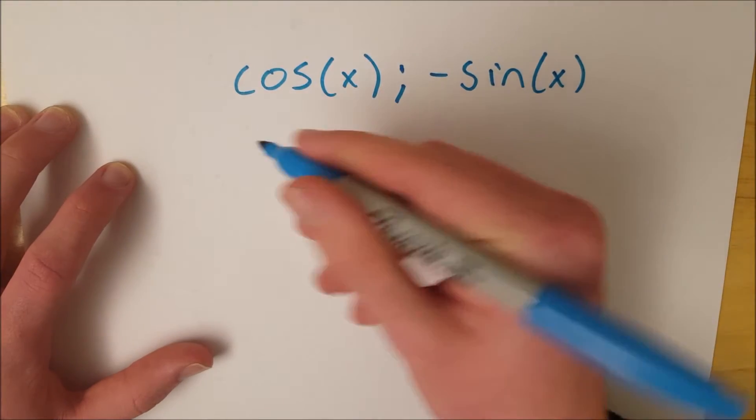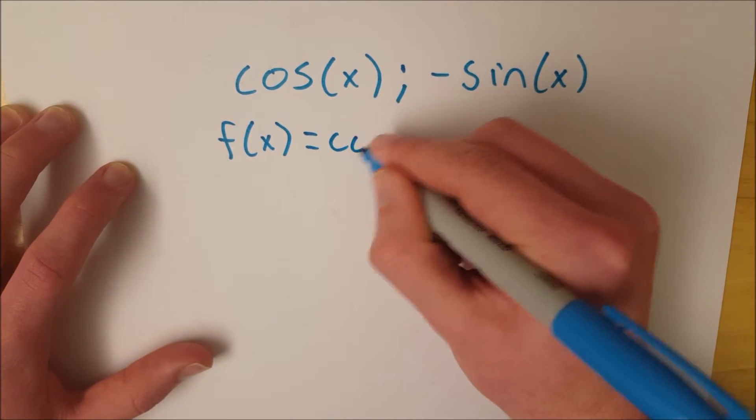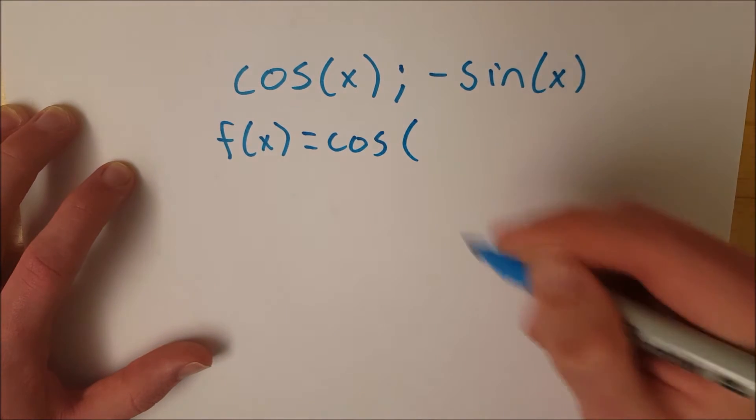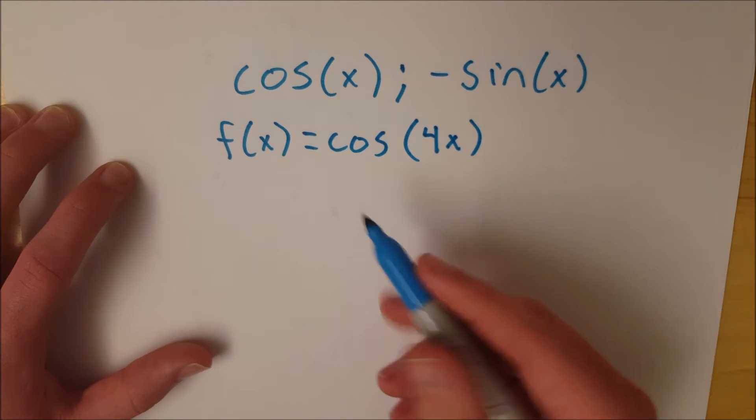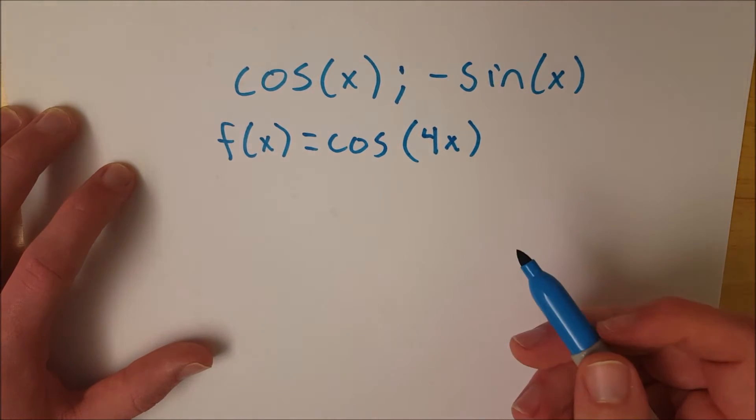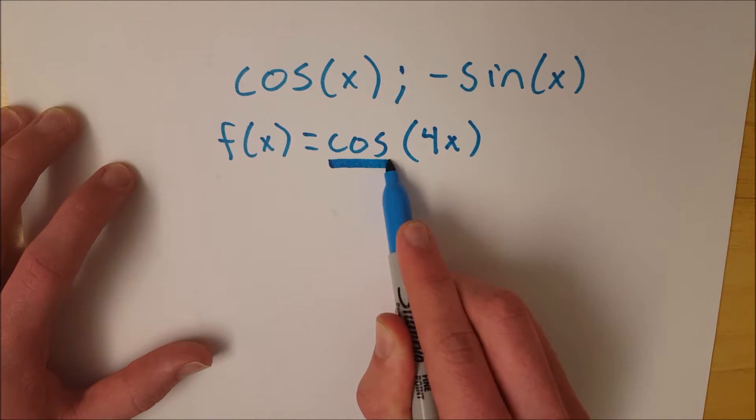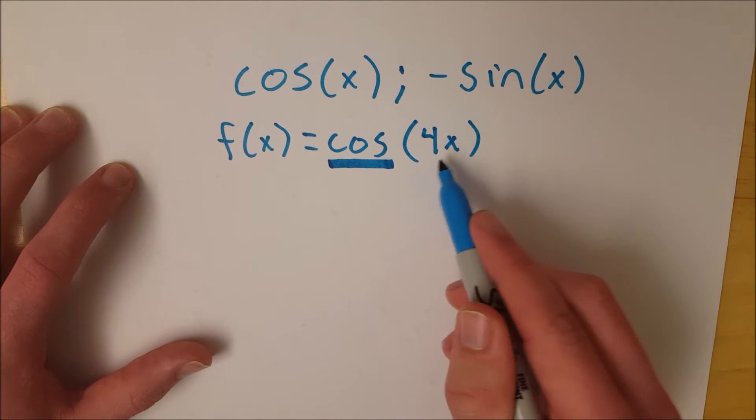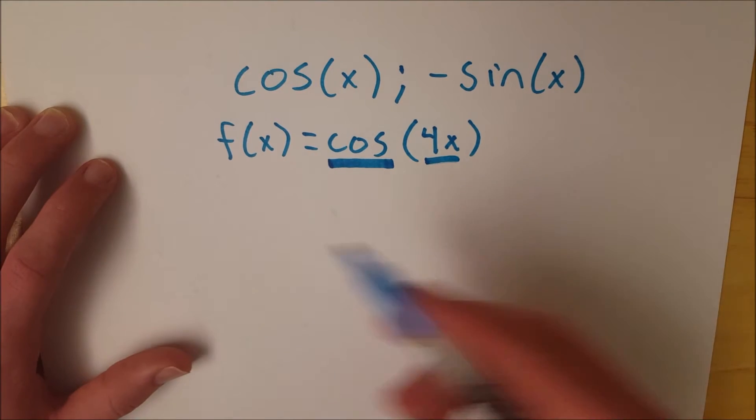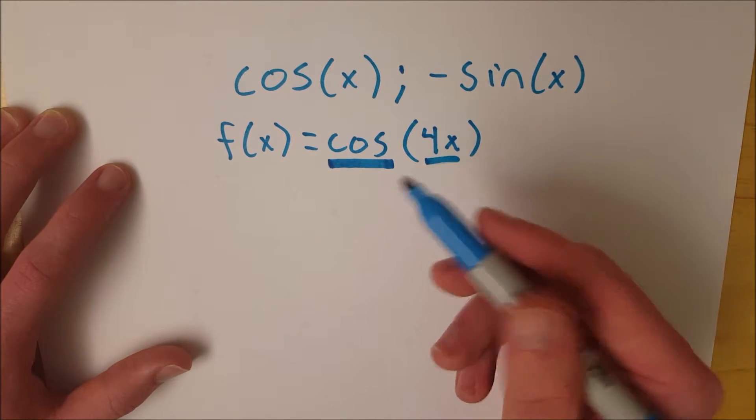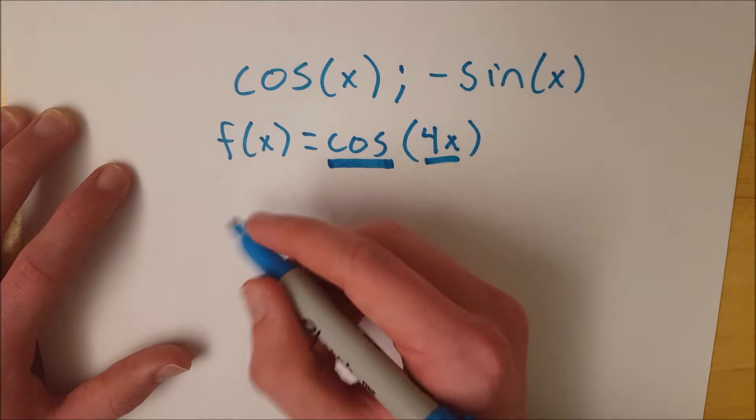But let's say we've got something more complicated. Let's say f of x equals cosine of 4x. Now in this situation we're going to need the chain rule because we've got a bit of a composite function. We've got our outside function cosine and then our inside function 4x instead of just a normal x. Now if we use the chain rule here, again we need to take the derivative of the outside function, keeping the inside function the same. That's the key.